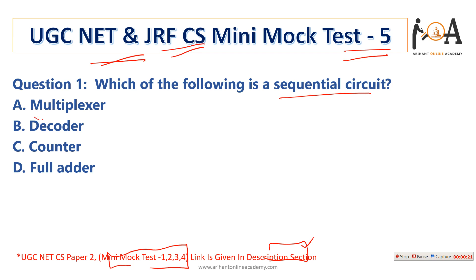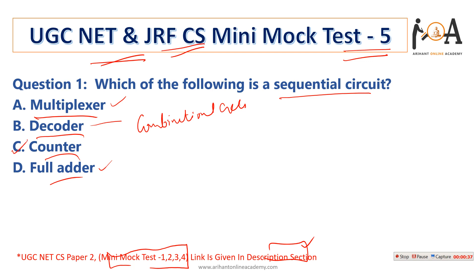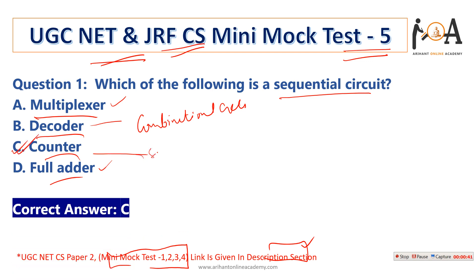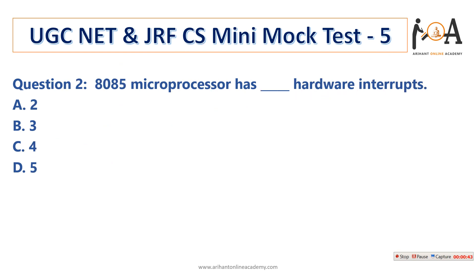Question number 1: which of the following is a sequential circuit? The options are multiplexer, decoder, counter, or full adder. Multiplexer, decoder, and full adder are combinational circuits. Only the counter is a sequential circuit. So option C is the correct answer.